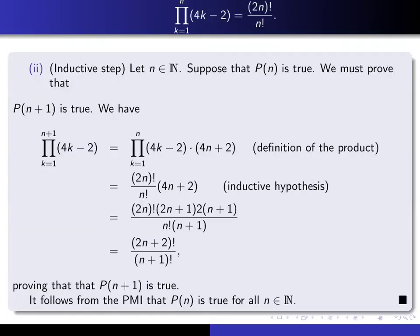Now we come to the inductive step. We give ourselves a generic natural number n, and we assume that P(n) is true. And we have to prove that P(n+1) is true. So we have the following. I take the left-hand side of what it is I'm trying to do. So it's this thing here in which we replace n by n+1. So there's the left-hand side.